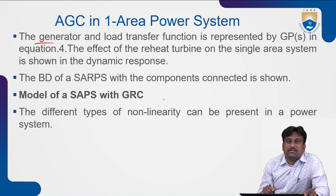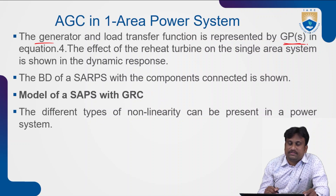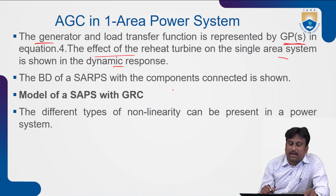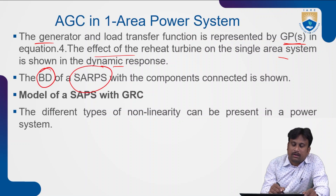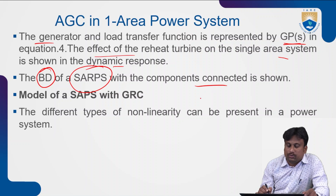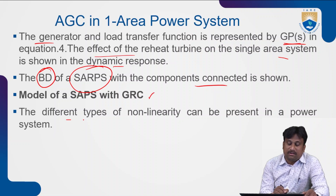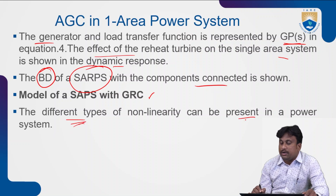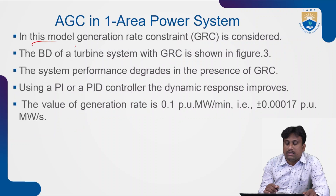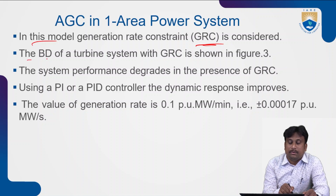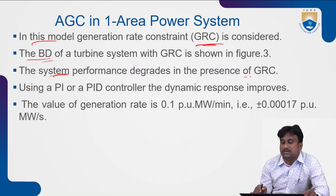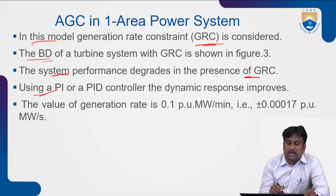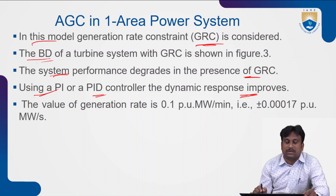The generator and load transfer function G_P(S) has already been seen. The effect of the reheat turbine on the single area power system gives a suitable dynamic response. The transfer function of the non-reheat turbine is GT(S) = 1/(1+ST_T), while the reheat turbine transfer function is GTR(S) = (1 + S*K_R*T_R) / ((1+ST_T)(1+ST_R)). G_P(S) is considered as KPS/(1+ST_PS). In the SAPS model with generation rate constraint (GRC), system performance degrades in the presence of GRC, and using a PI or PID controller improves the dynamic response. The GRC value is 0.1 pu MW per minute, approximately ±0.0017 pu MW per second.